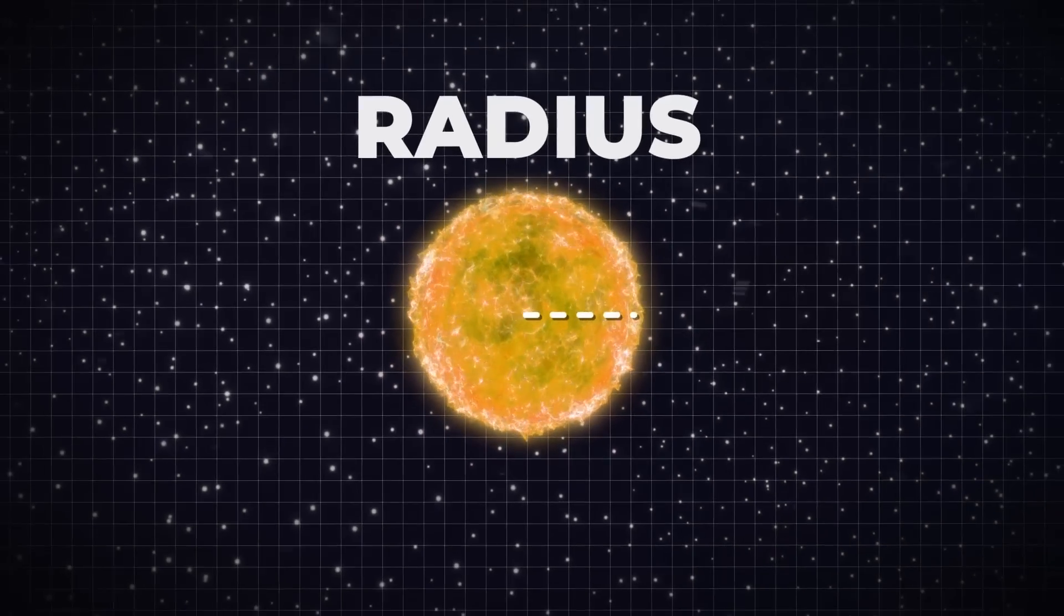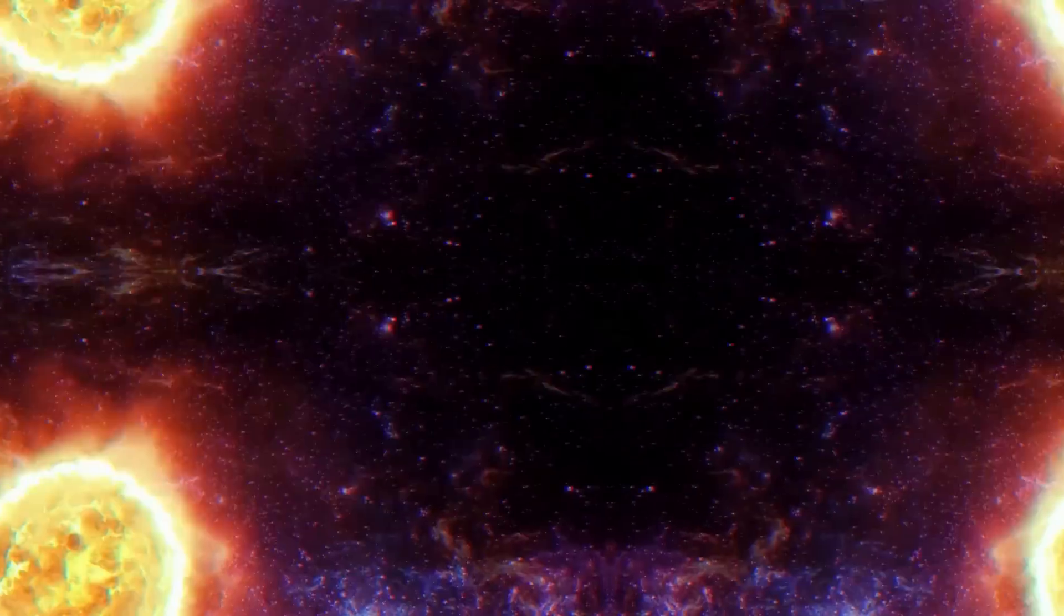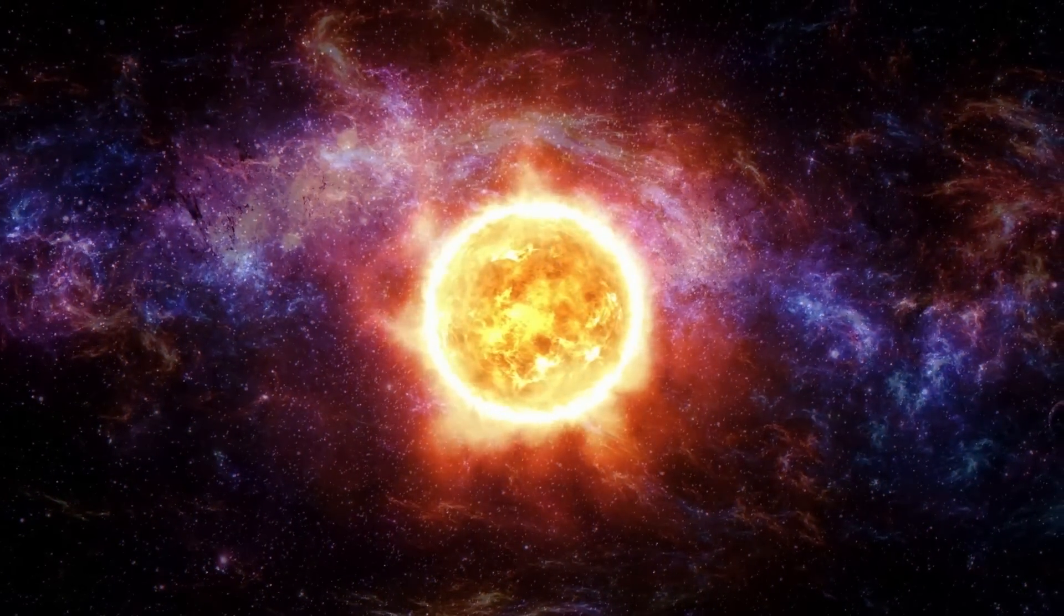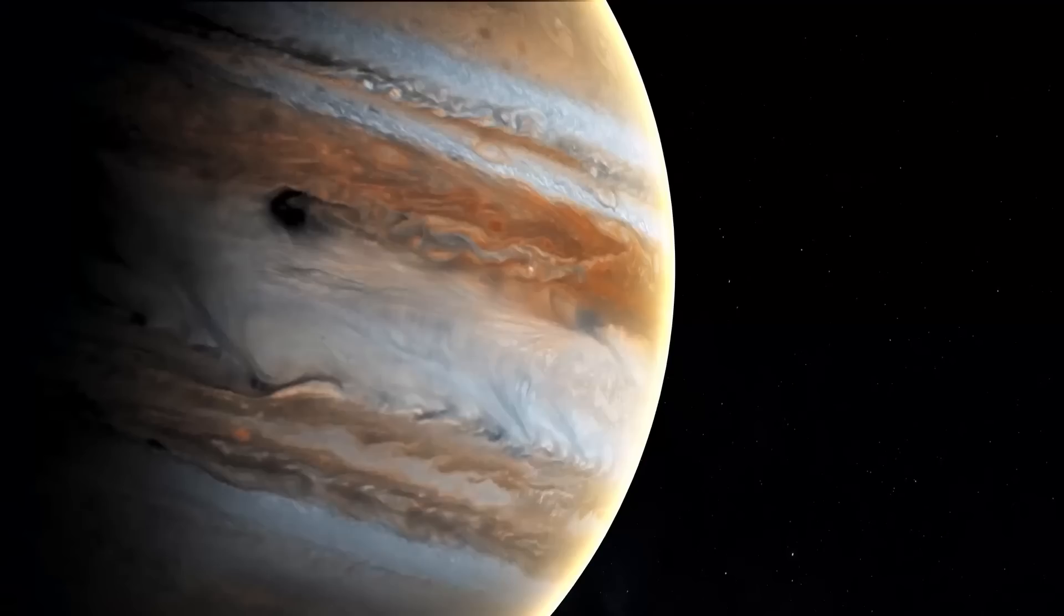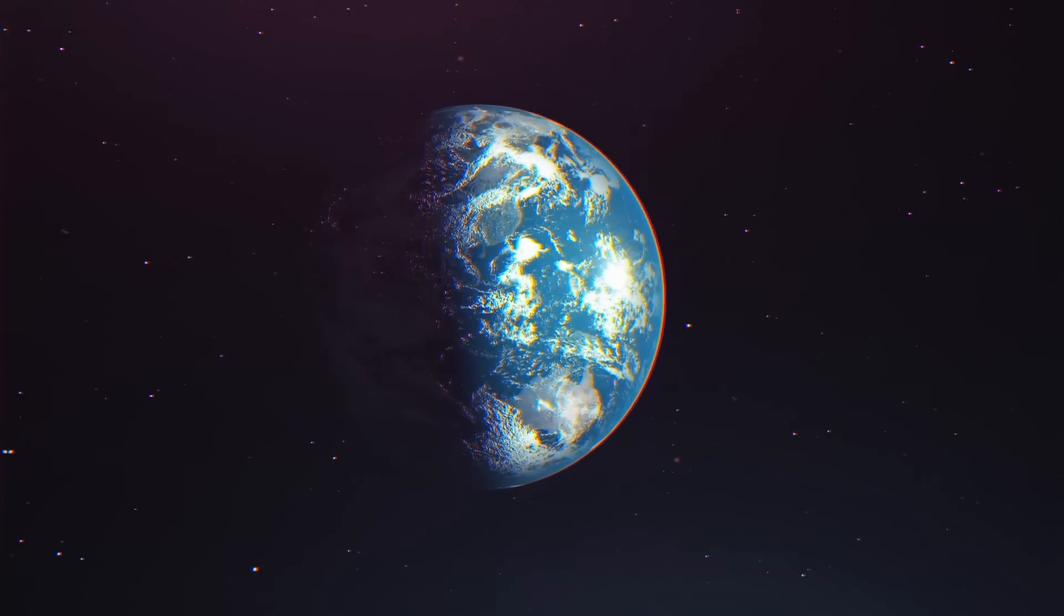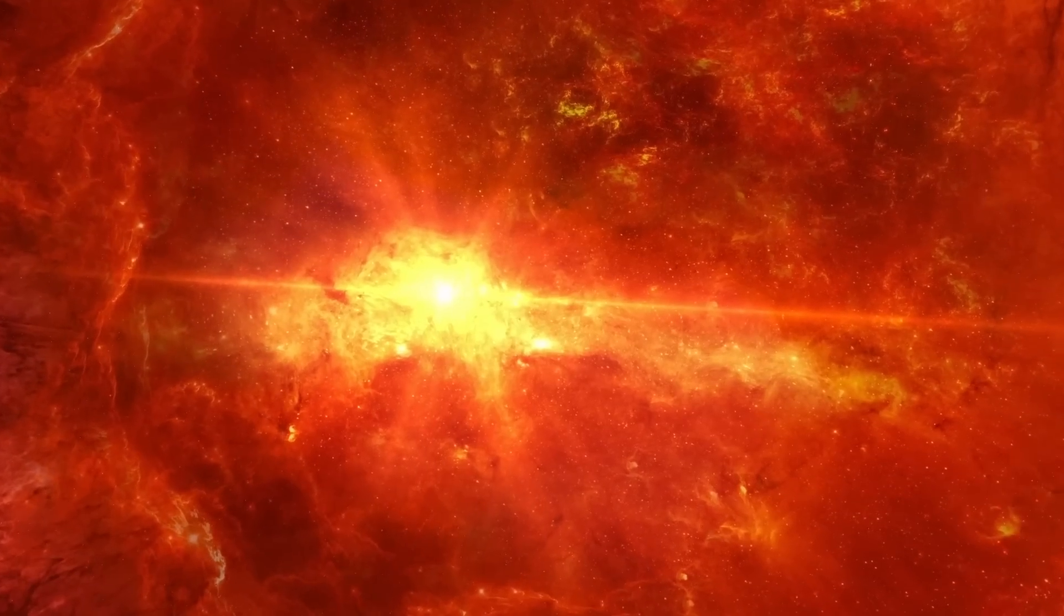The Sun has a radius that is around 764 times smaller than Betelgeuse. If this star replaced our Sun in the solar system, it would reach past the asteroid belt and even beyond Jupiter. This suggests that Earth, Mars, Venus, and Mercury would all be completely absorbed.